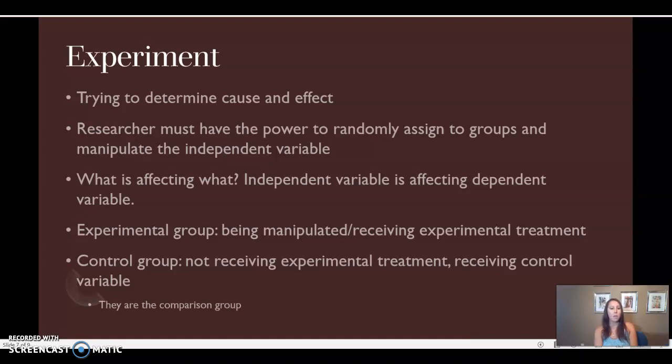Your experimental group is the group that's being manipulated or receiving your experimental treatment. Your control group is the group that's not receiving your experimental treatment. They're receiving a control variable. If I wanted to say does consuming caffeine before exercise increase your endurance, my experimental group, I would hand you a Red Bull or a Monster. My control group, I would hand you a glass of water. You're not receiving the experimental. You're receiving a control. You're receiving something that should not have any impact. You are the comparison group. You are the control group. You're what I'm comparing the experiment to. Does the Red Bull have a bigger impact than drinking a glass of water for your exercise?